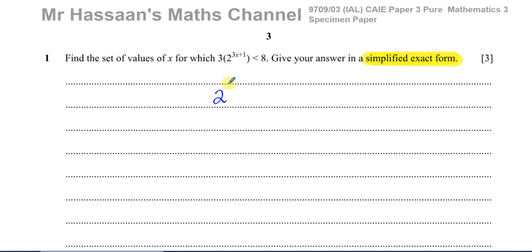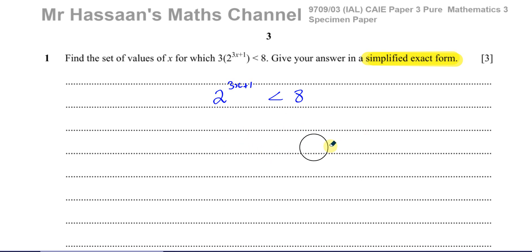The type of exponential equations you're used to prior to P3 are types where the number can become expressed as the same base to a power. For example, I could express this as 2 to the power of 3x plus 1 is less than 2 to the power of 3. But in this case, because you have the 3 here, three cannot be expressed as 2 to the power of something, so we cannot do the same thing.